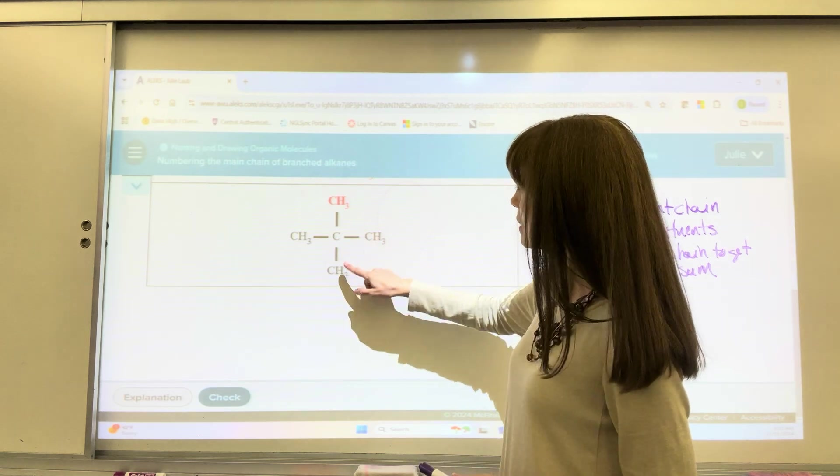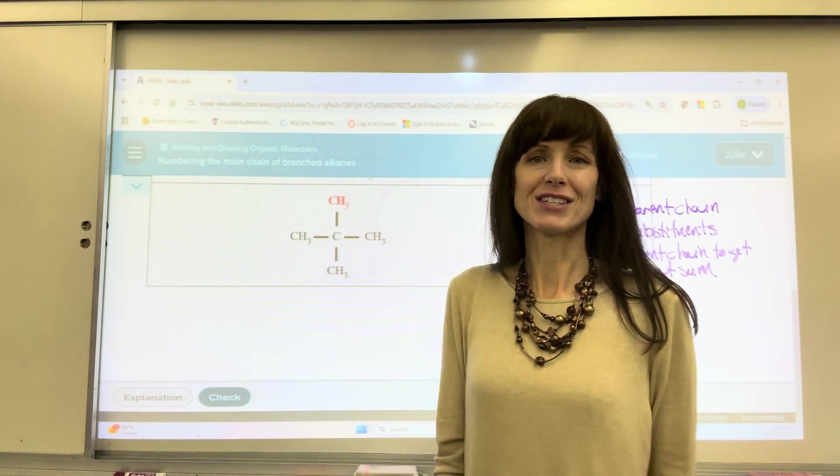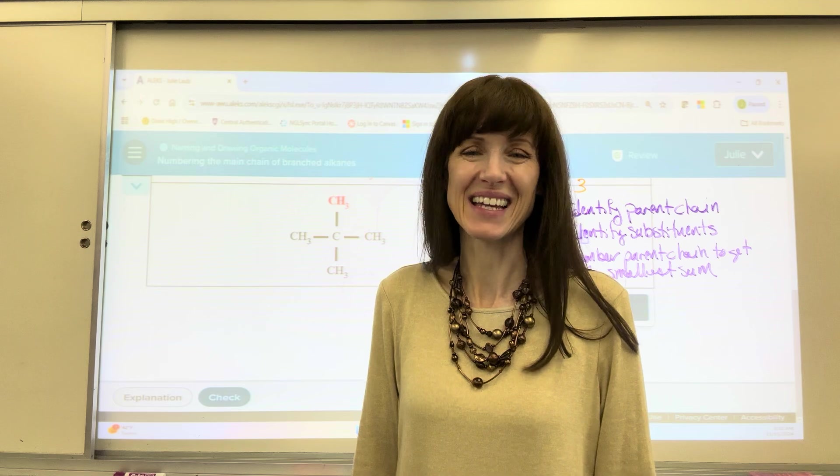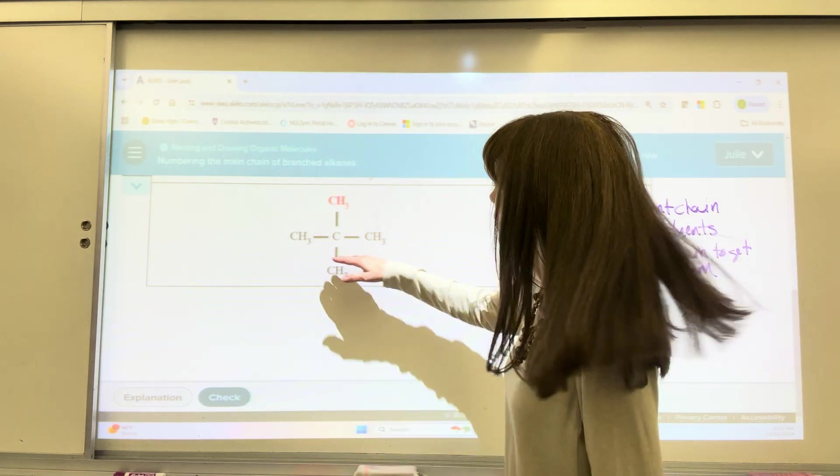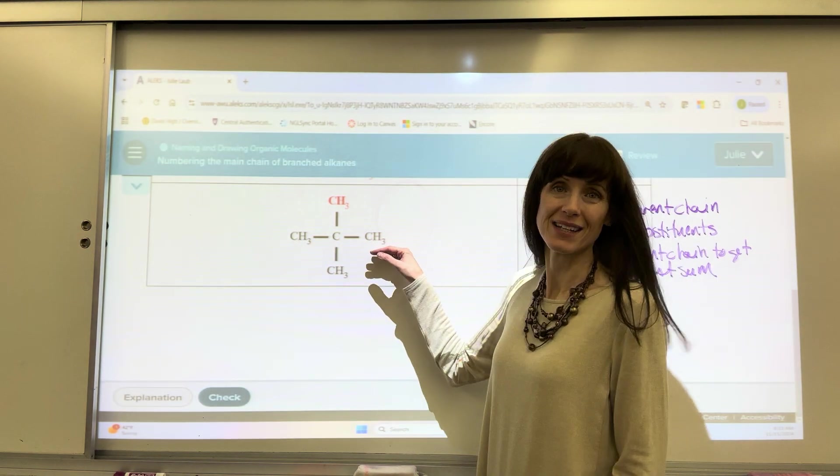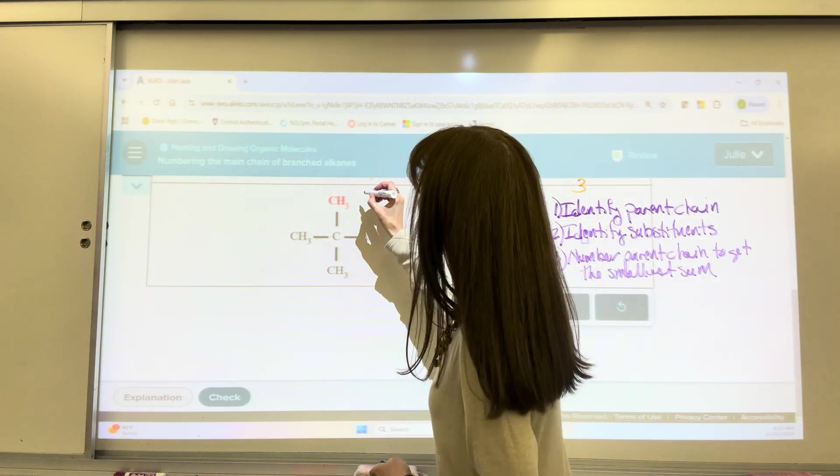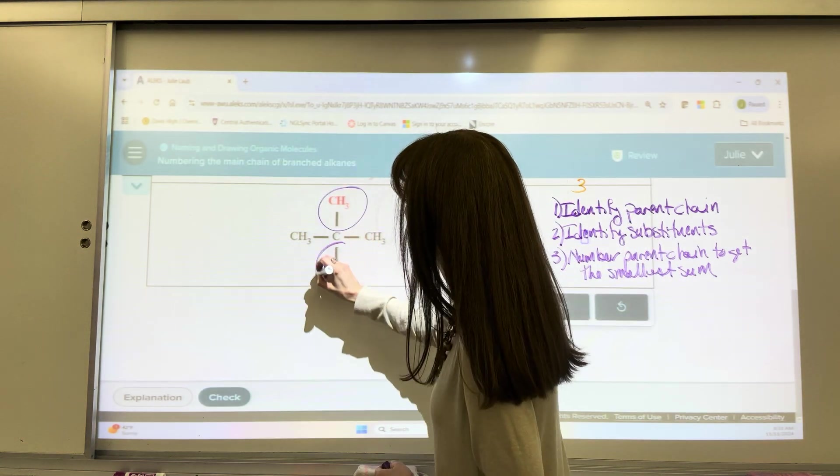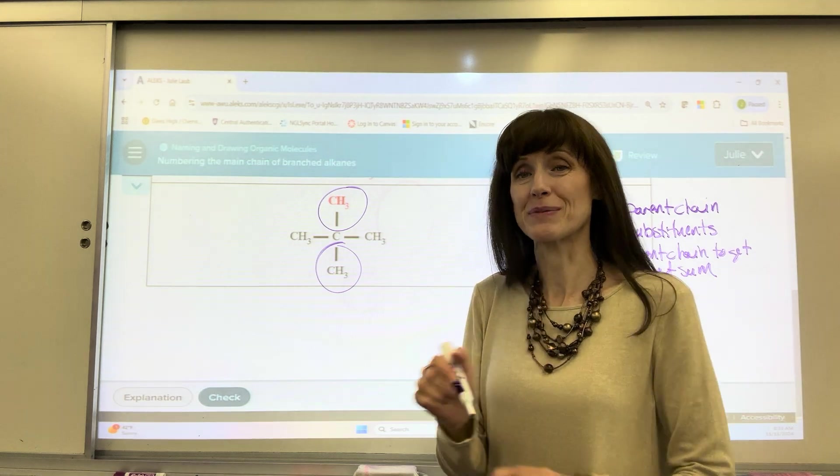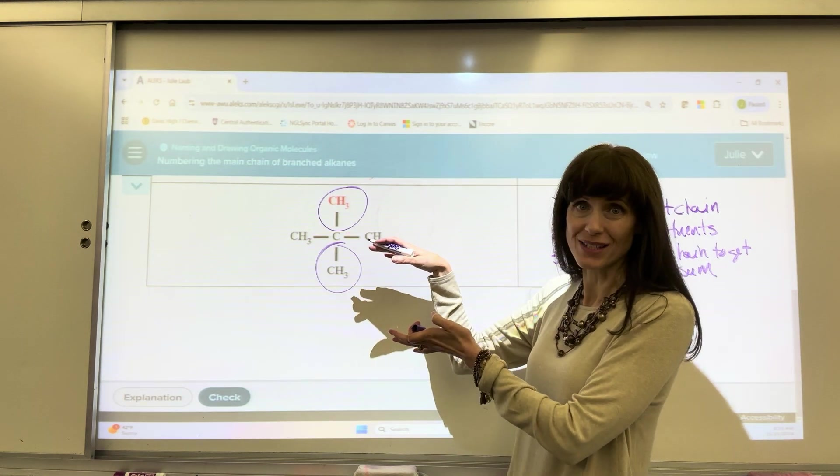Because they're saying that's a substituent. I could have 1, 2, 3. 1, 2, 3. Shortest chain, or excuse me, longest continuous chain is going to be 3. I'm going to go ahead and use my straight chain here in the middle, just easier for my brain. My substituents are here and here. We've got two methyl groups that are attached to that longest chain.